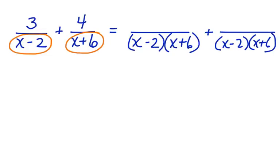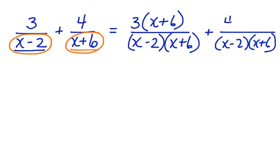In this first expression, x minus 2 is already present, so we multiply by x plus 6. What we do to the denominator, we also have to do to the numerator. So let's make this 3 times x plus 6. In the second rational expression, we already had x plus 6, so we're going to multiply by x minus 2. So let's do that to the numerator: 4 times x minus 2. Now we have renamed both of these rational expressions.